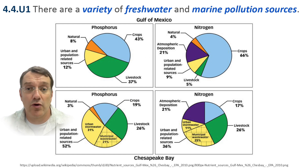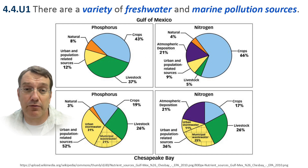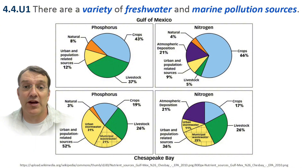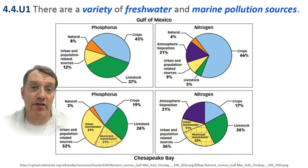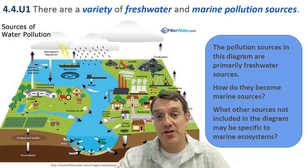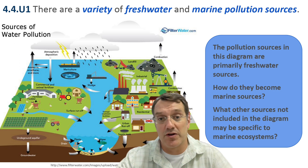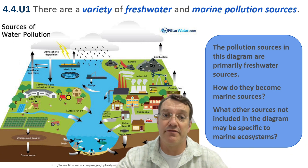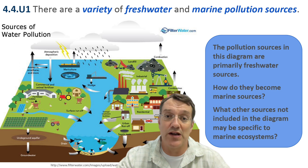In the Gulf of Mexico, crops account for about 43% of phosphorus and 66% of nitrogen inputs, while livestock operations add 37% of all the phosphorus. While many pollution sources initially affect freshwater systems, they can ultimately impact marine environments as well.